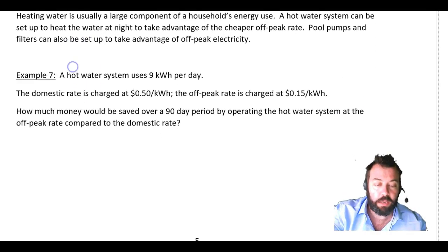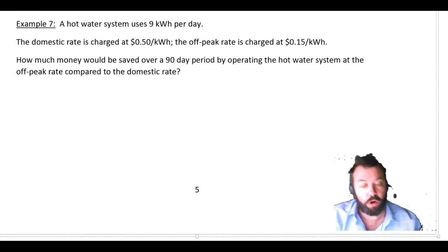So here we have an example. A hot water system that uses 9 kilowatt hours per day. That's probably a lot, but anyway, 9 kilowatt hours per day. The domestic rate is 50 cents per kilowatt hour, and the off-peak rate is 15 cents per kilowatt hour. How much money will we save over a 90 day period by operating the hot water system at the off-peak rate compared to the domestic rate?